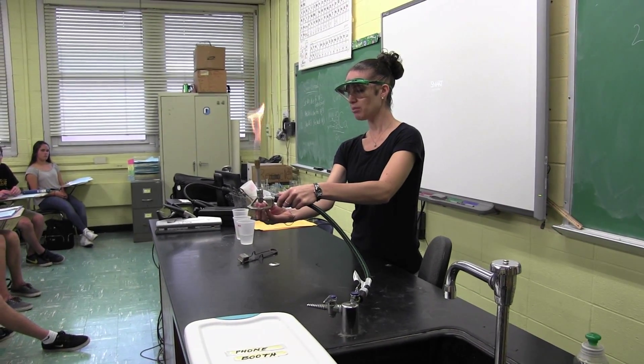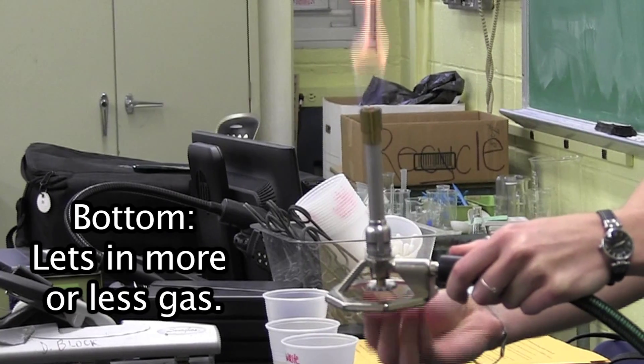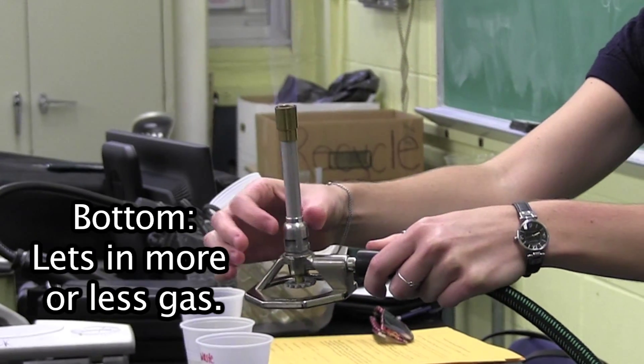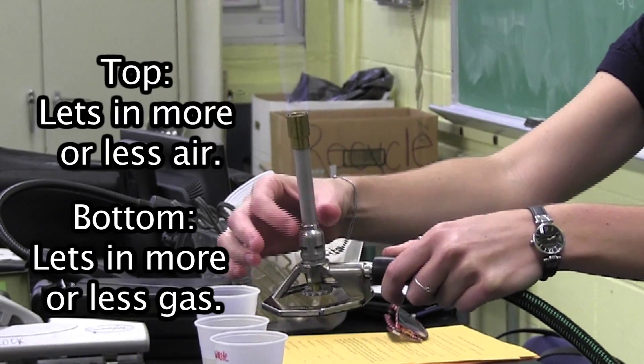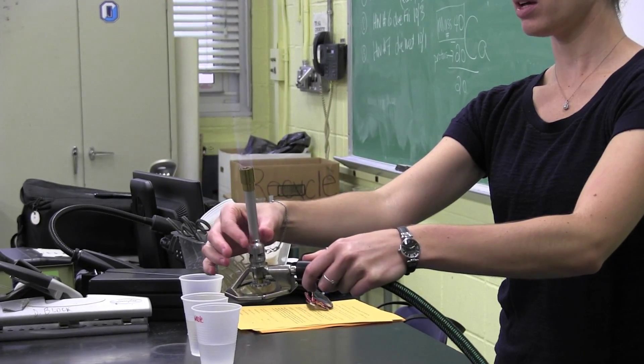This bottom knob, if I turn it, lets in more or less gas, depending on which way I turn it. This top one lets in more or less air. And you need the right combination of gas and air to get the right flame.